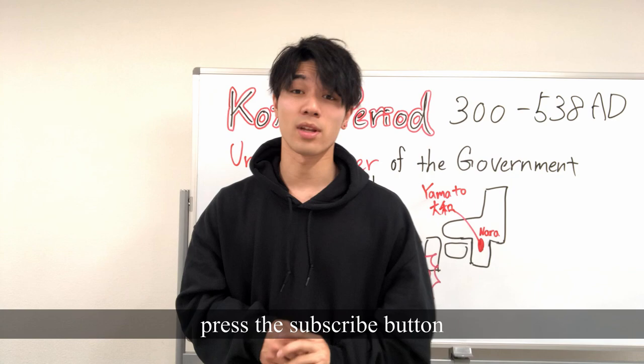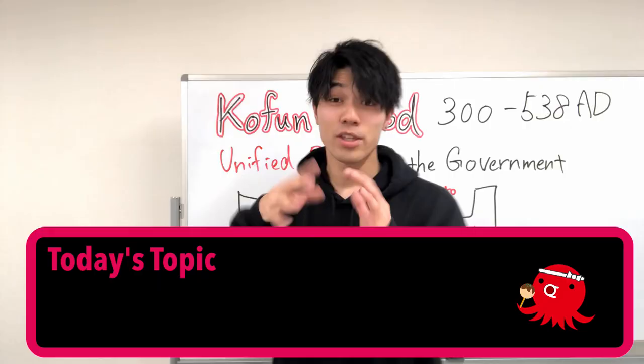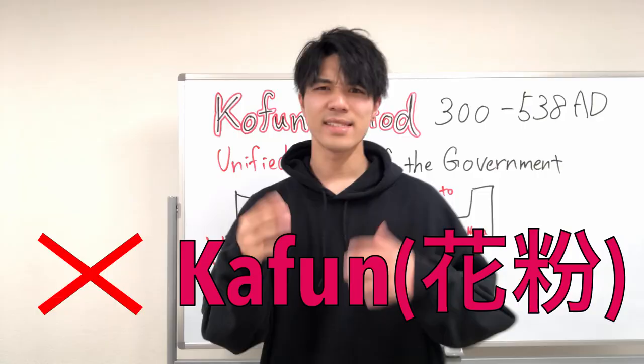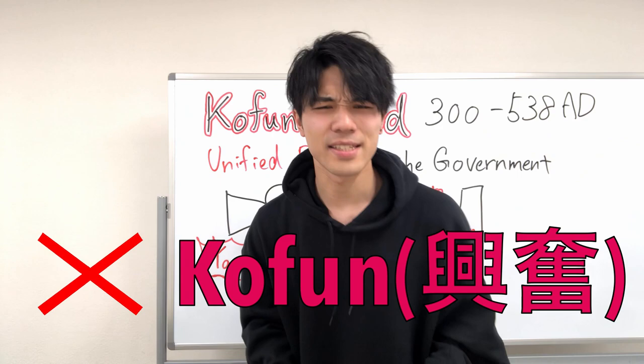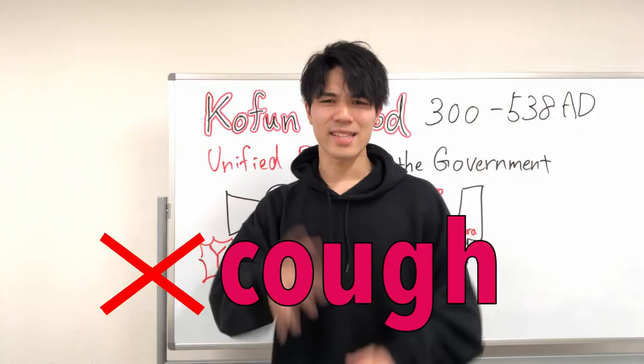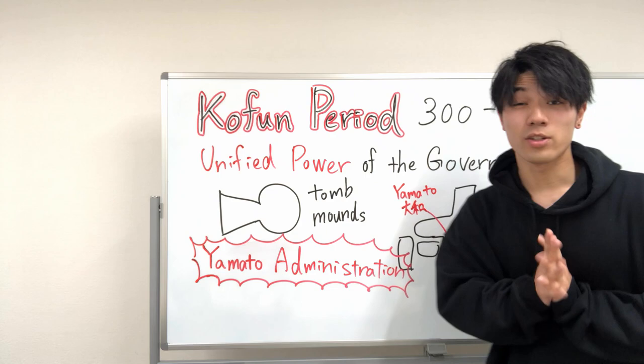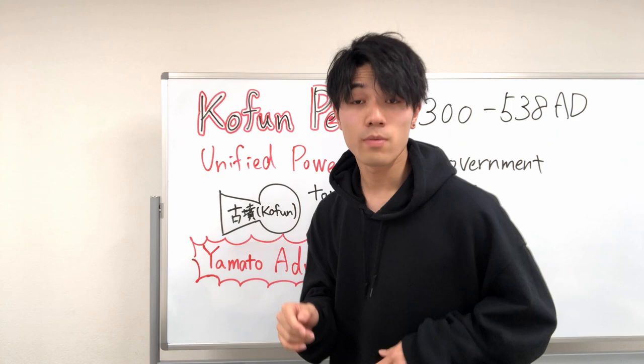Today's topic is the Kofun period. The Kofun period spans from about 300 to 538 AD and is characterized by the increasingly unified power of the government. The Kofun period is named after the tomb mounds called kofun.